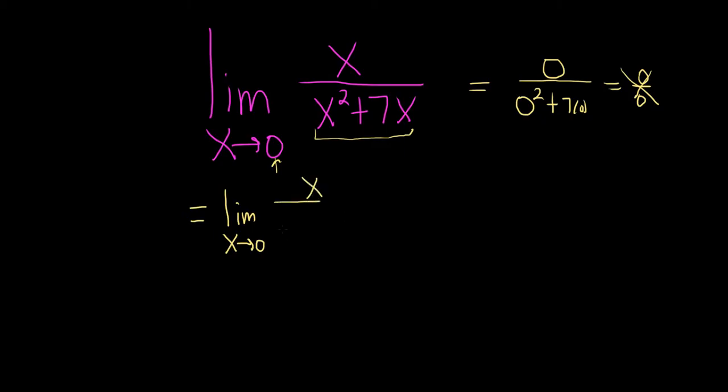This is x over. We can pull out that x on the bottom. So that will give us a parenthesis. Let's see. x times what is going to give us x squared? So x, then plus, and then x times what is going to give us 7x? Looks like we're missing a 7.